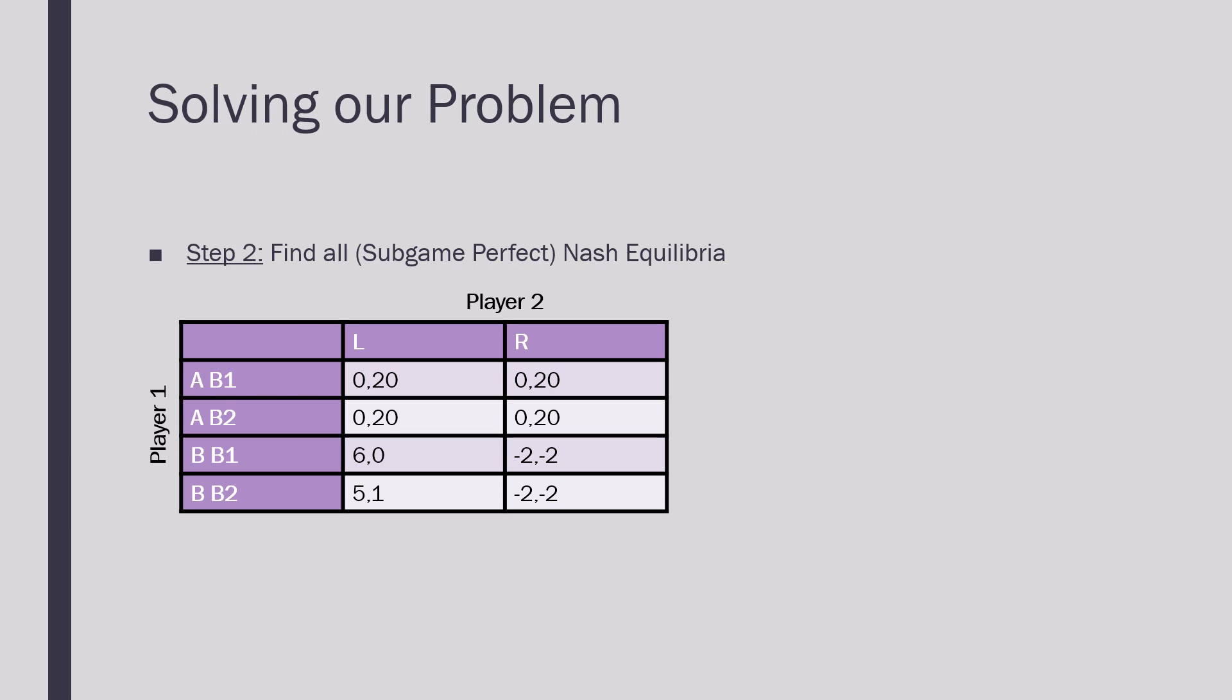Next we're going to solve for all Nash equilibria and subgame perfect Nash equilibria. We make a distinction because there is a proper subgame here. Now the Nash equilibria of this game are: where player one is playing A and B1 and player two is playing R; where player one is playing A B2 and player two is playing R; and where player one is playing B and B1, and player two is playing L.